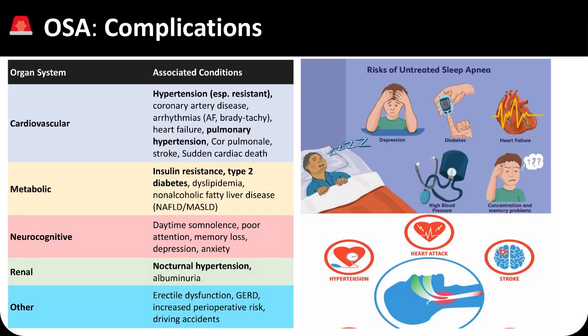OSA can lead to serious multisystem complications if left untreated. Cardiovascular effects include resistant hypertension, coronary artery disease, arrhythmias such as atrial fibrillation, heart failure, pulmonary hypertension, cor pulmonale, stroke, and sudden cardiac death. Metabolic complications involve insulin resistance, type 2 diabetes, dyslipidemia, and fatty liver disease.